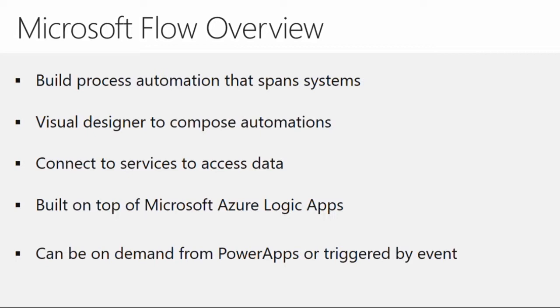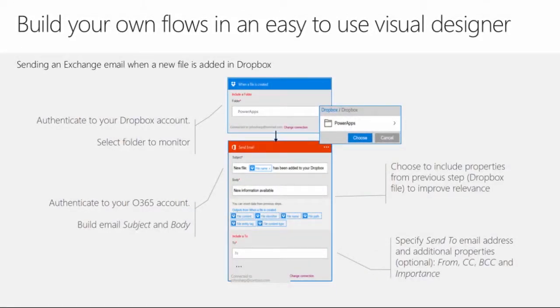Flow concepts can be triggered in multiple ways — by an event or record being created, or even from a PowerApps button click that initiates the flow to do something specific. For example, you scan a business card in a custom app, hit 'create lead,' which fires a Flow that creates that record inside Dynamics 365. As a build example: when a file is added to a Dropbox folder, it authenticates to Office 365 and composes an email.